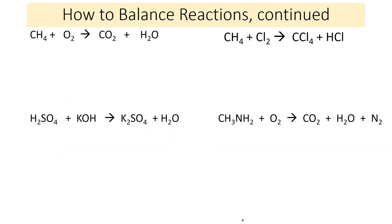Let's look at some more examples. You can pause and try these on your own. In the first example, the elements are carbon, hydrogen, and oxygen. Starting with carbon: I have one carbon on the reactant side and one on the product side, so that's balanced.